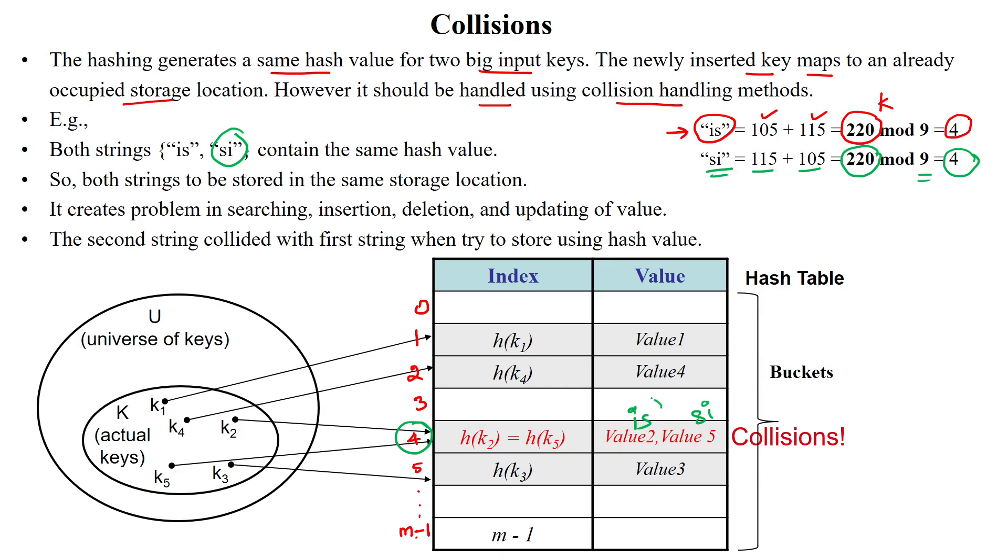But already IS is stored. The memory location is occupied by the first word IS. Then the second word is unable to store in the same index number 4. So now SI, the word is collided with the already existing word IS. So this process is called collision.